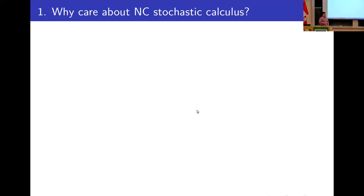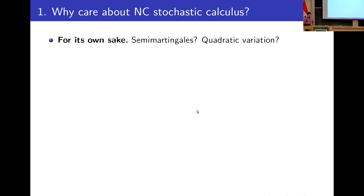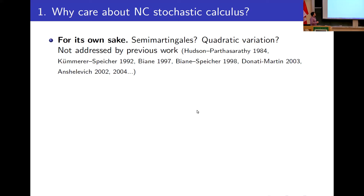Why would you care about non-commutative stochastic calculus? First, perhaps for its own sake — a lot of people in the room are motivated to consider non-commutative versions of classical probability concepts. In the case of stochastic calculus, the most important objects are semi-martingales and quadratic variation, which have not been addressed in previous work in a general framework. Prior works focus on non-commutative processes with Brownian, Gaussian, or Lévy process character, as opposed to a general semi-martingale.